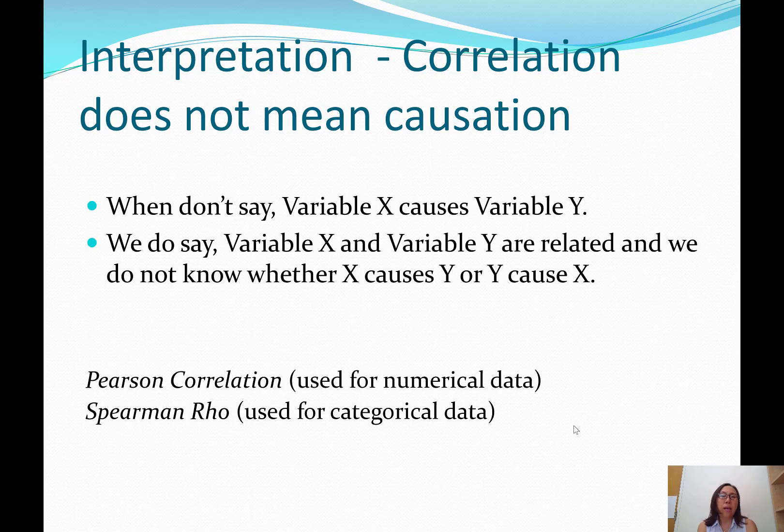When we're interpreting correlations, we have to understand very clearly that correlation does not mean causation. You may have heard of that saying before if you've taken a stats class. When we say the two variables x and y are related, we don't say variable x causes variable y, just based on correlations. We do say variable x and variable y are related and we do not know whether x causes y or y causes x. We'll talk about Pearson correlations and Spearman Rho. For our discussion, we're going to only focus on Pearson correlation and how we calculate the correlation coefficient.